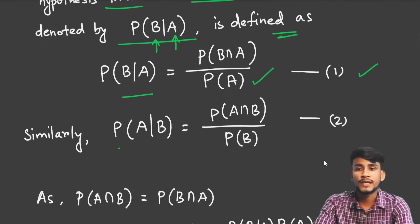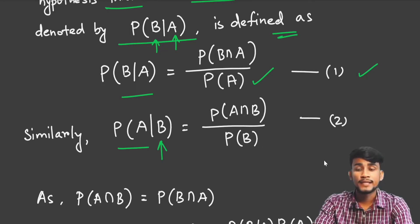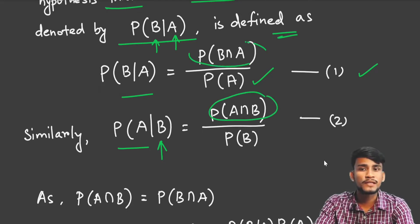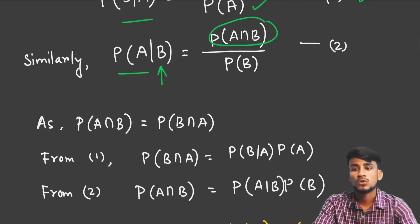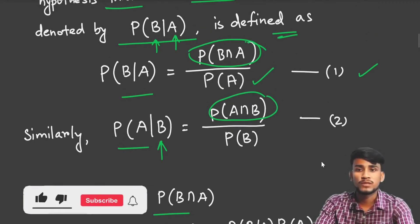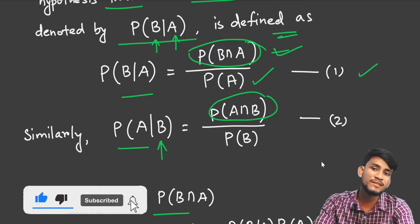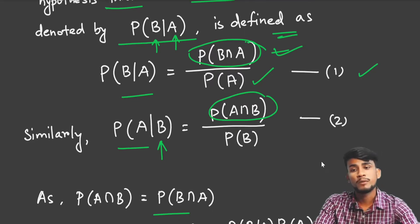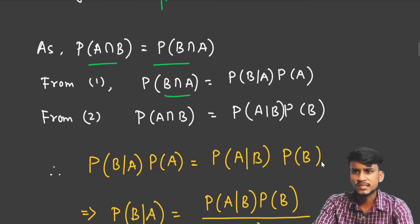Similarly, P(A|B) — that means if event B has already occurred and you have to find the probability of event A — equals P(A∩B) / P(B). Now, A∩B and B∩A are the same thing, so P(A∩B) and P(B∩A) are equal. Based on this result we can write P(B∩A) = P(B|A) · P(A), and similarly P(A∩B) = P(A|B) · P(B).